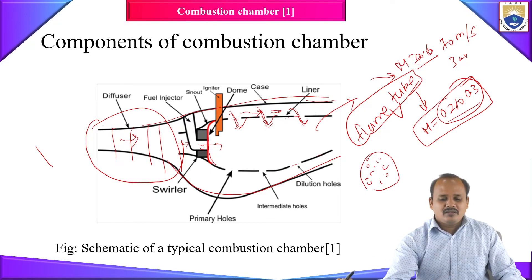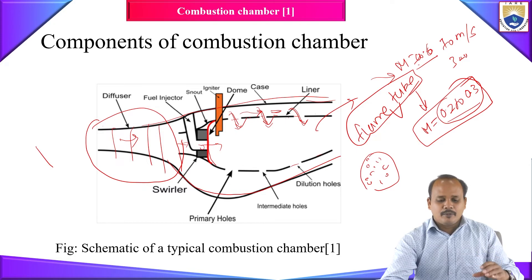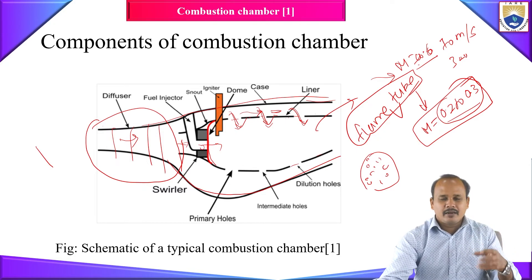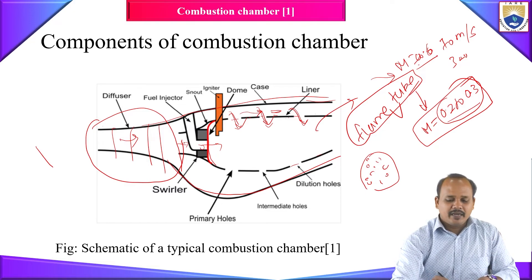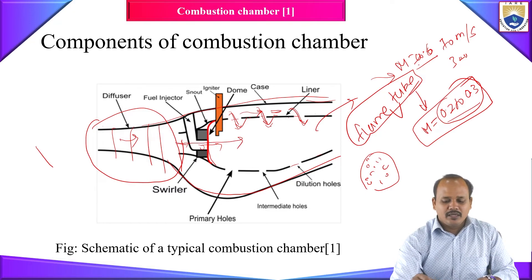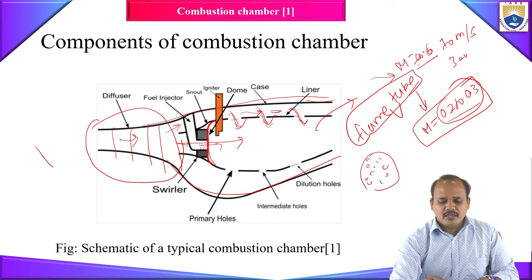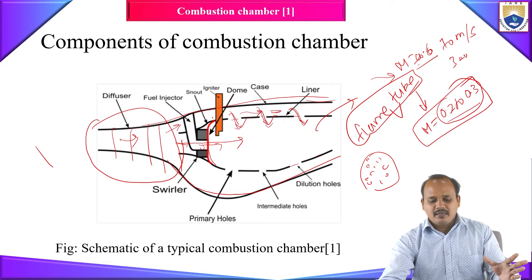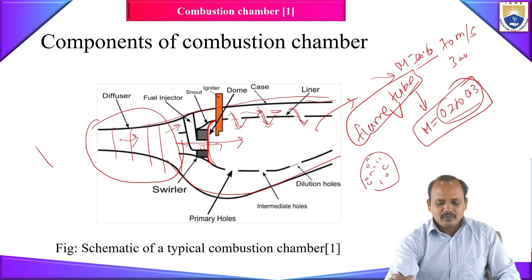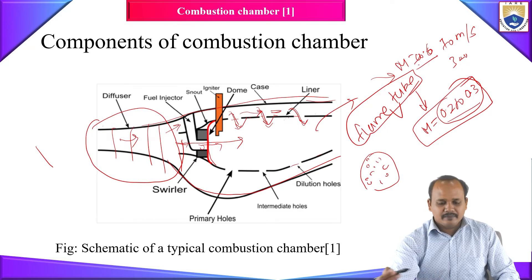The snout is the component that splits the incoming air into primary air and secondary air. Primary air flows into the liner, and secondary air flows through the passage between the casing and the liner. The function of the snout is simply to divide the incoming air into these primary and secondary flows.